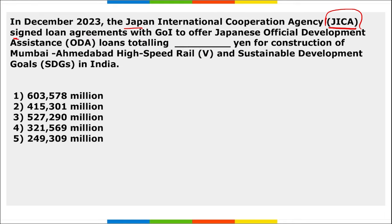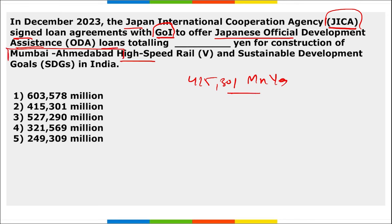Next: Japan International Cooperation Agency (JICA) signed a loan agreement with the Government of India to offer Japanese Official Development Assistance (ODA) totaling 415,301 million yen for the construction of the Mumbai-Ahmedabad High-Speed Rail project, as well as for promoting sustainable development goals in India.